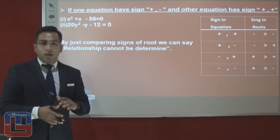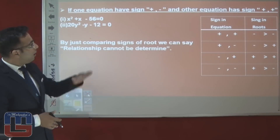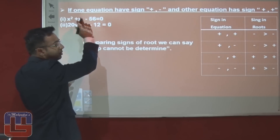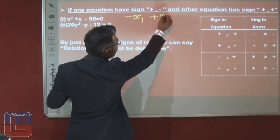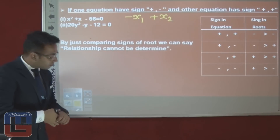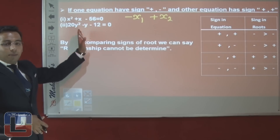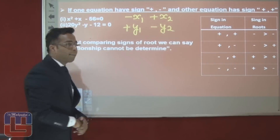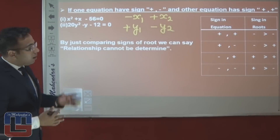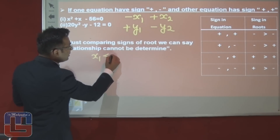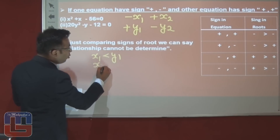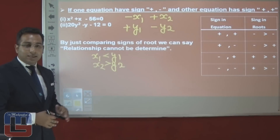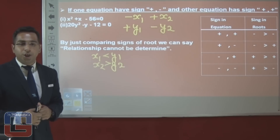Case 4: One equation has sign plus-minus, for example x² + x − 56, and the other has sign minus-minus, for example 20y² − y − 12 = 0. The first gives roots minus-plus and the second gives roots plus-minus. On comparing, x1 < y1 and x2 > y2, giving both less than and greater than. The answer is: relationship cannot be determined.